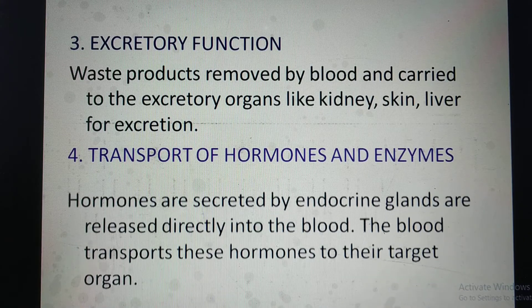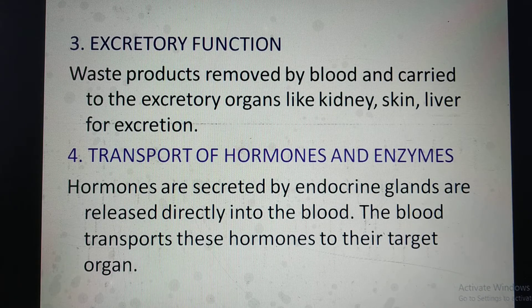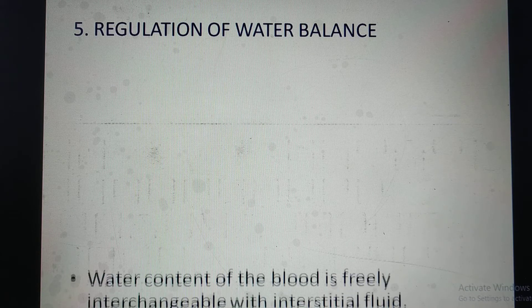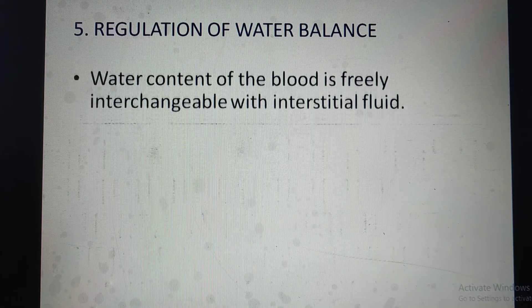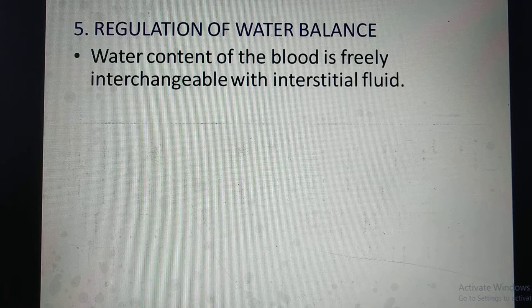Hormones are secreted by endocrine glands and released directly into the blood. Blood transports these hormones to their target organs. Fifth function: regulation of water balance. The water content of blood is freely interchangeable with interstitial fluid.